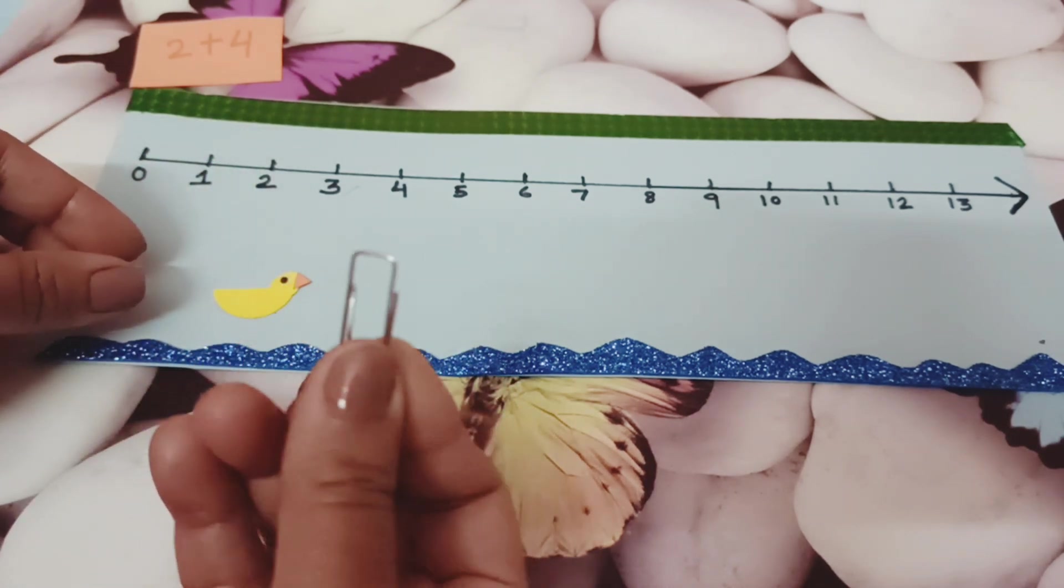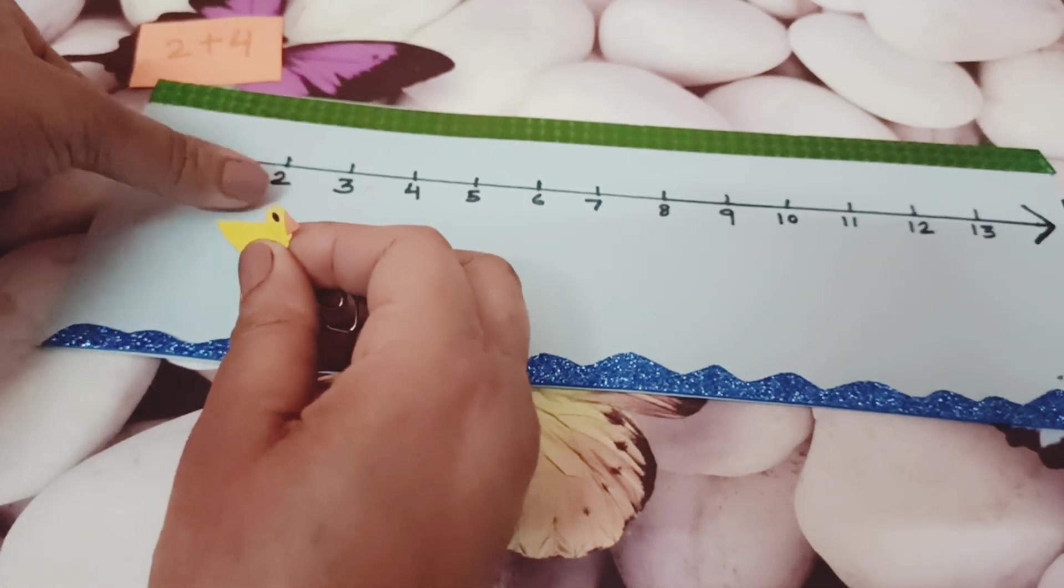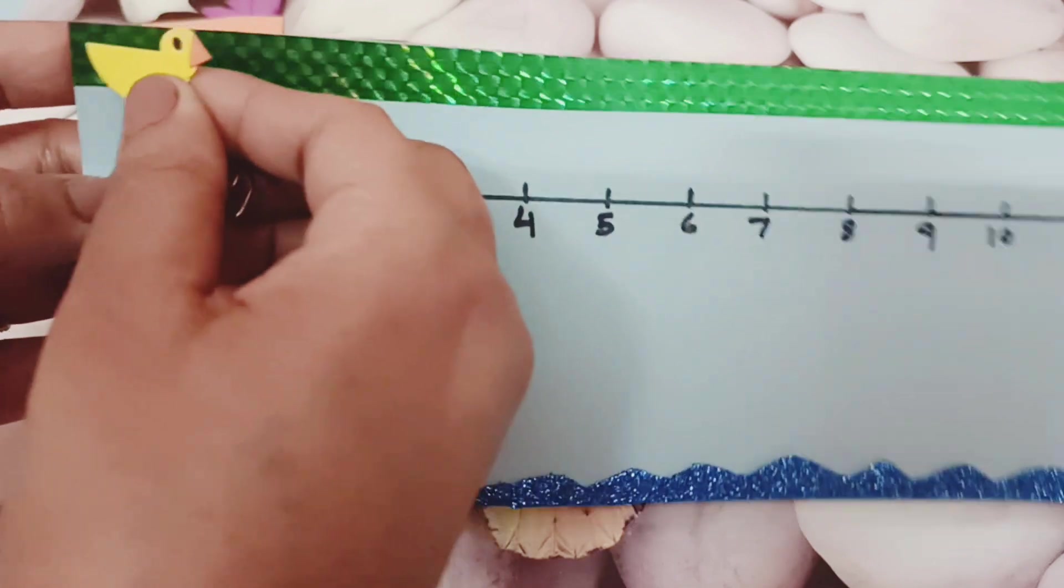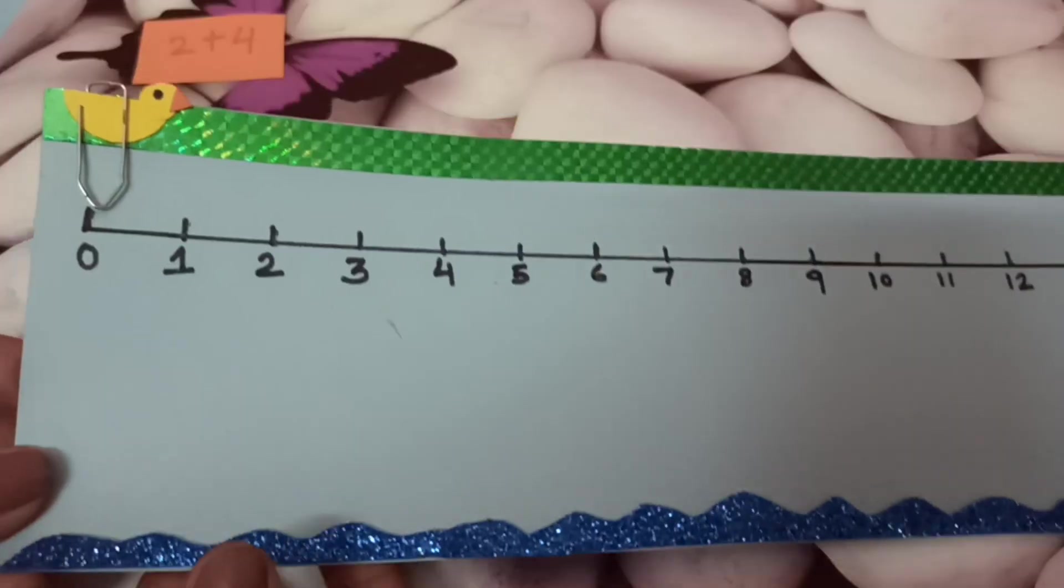I have this paper clip. What we will do, we will just clip this duck on the edge of the number line, on the left hand side of the number line. I am just clipping it with the help of paper clip.